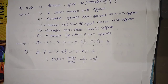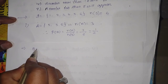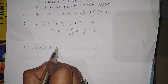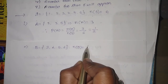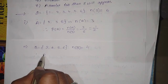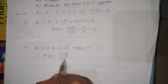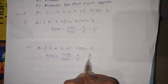Second question — a number greater than or equal to 3 will appear: B = {3, 4, 5, 6}, so n(B) = 4. P(B) = n(B) / n(S) = 4/6 = 2/3.